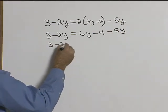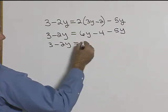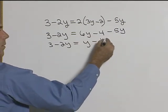Now we can combine some like terms on the right hand side. 6y minus 5y will be y minus 4.